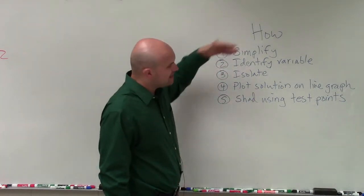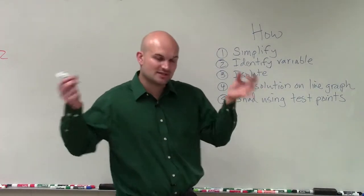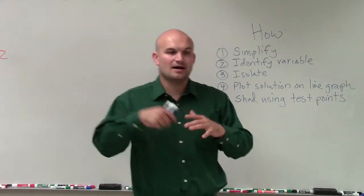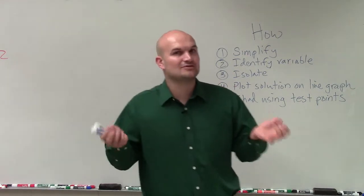If we have something that's multi-step, the first thing we want to do is make sure we can simplify. Get the variable to the same side, simplify, apply distributive property if needed, and so forth. Simplify it down to a two-step equation.